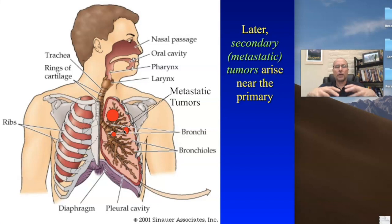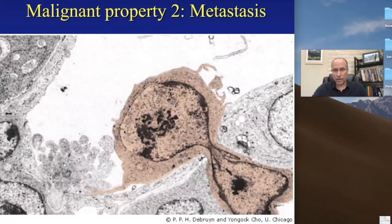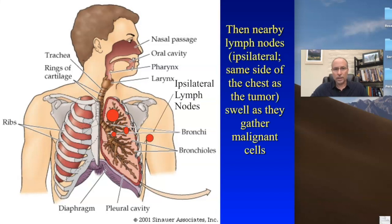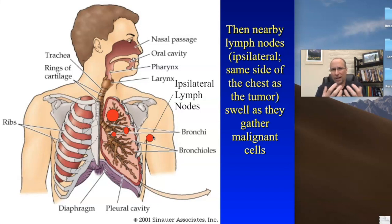The reason cancer cells tend to spread nearby first is because the immune system can sense and kill them. The vast majority of cells that get into the bloodstream are killed by the immune system. But the tumor continues to shed more and more cells from the primary and secondary tumors, and these tend to get trapped in lymph nodes — in the armpit, chest, or neck — which can swell as the tumor grows within them. Sometimes cells enter a lymph node and the immune system doesn't always kill them.